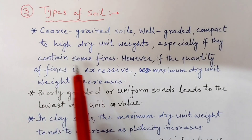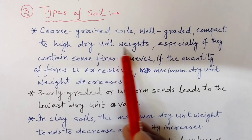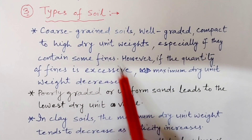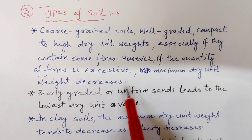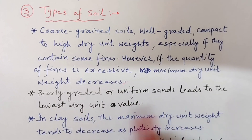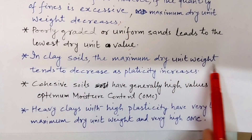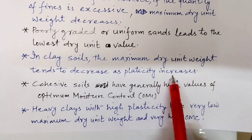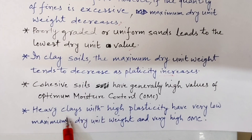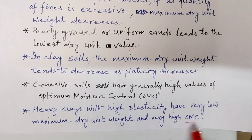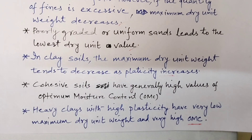From these curves, we observe that coarse-grained, well-graded soil compacts to a high dry unit weight, especially if it contains some fines. However, if the quantity of fines is excessive, the maximum dry unit weight decreases. Poorly graded or uniform sands lead to the lowest dry unit weight values. In clay soils, the maximum dry unit weight tends to decrease as plasticity increases. Cohesive soils generally have high optimum moisture content. Heavy clay with high plasticity has low maximum dry density and very high optimum moisture content.